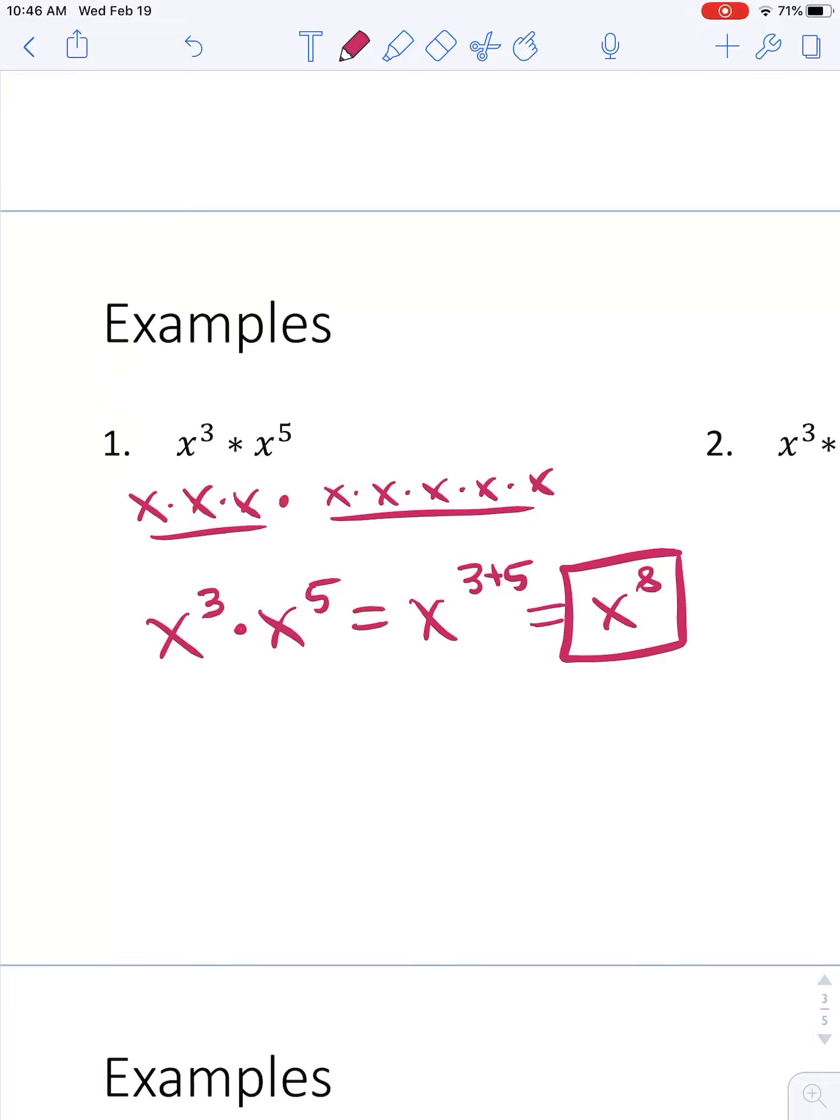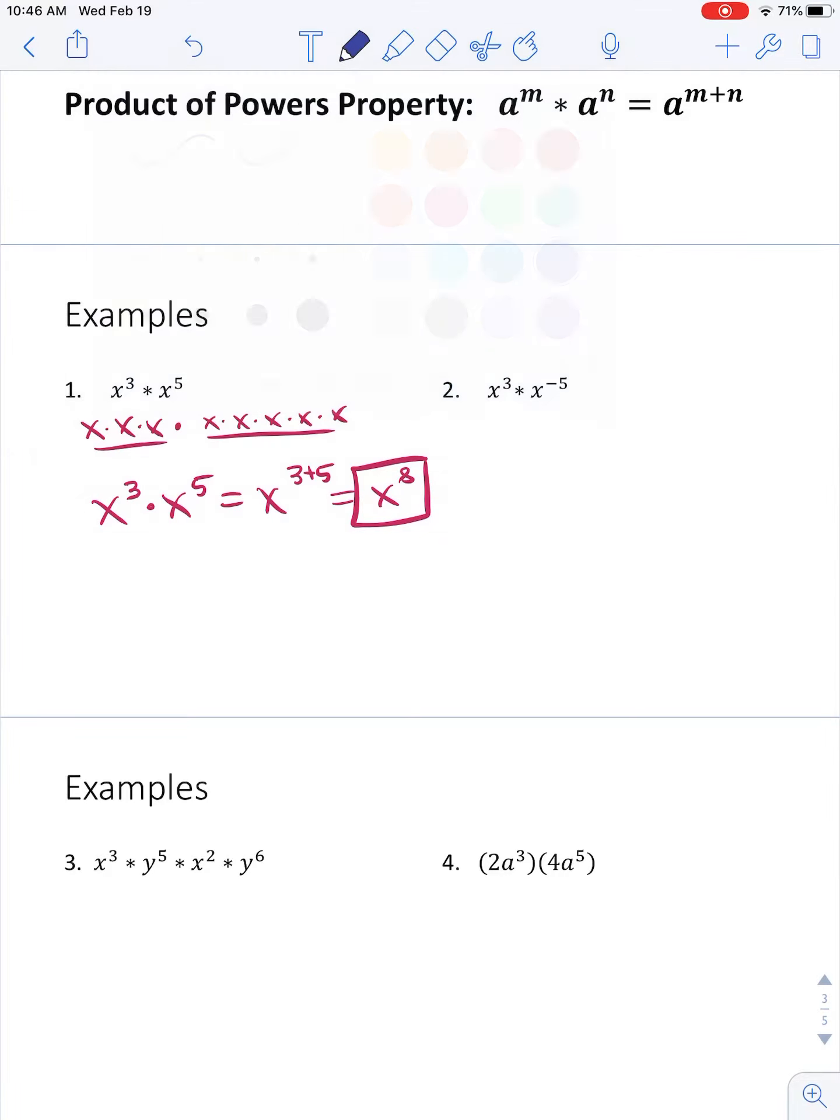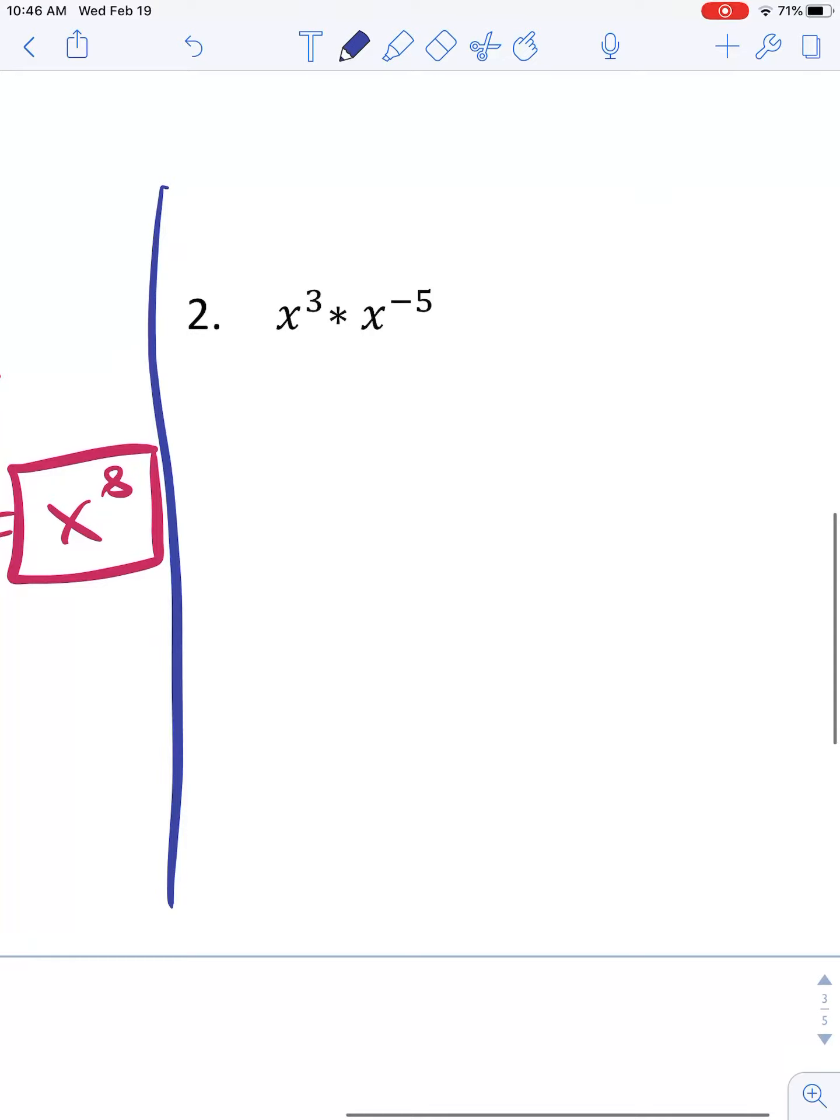That's all you got to do. Now that works out really nice for us when we have a problem that could actually be a little bit harder if we weren't careful. When I have something like x to the 3rd times x to the negative 5th, I can add those numbers together to get x to the 3 plus negative 5, or x to the 3 minus 5, which is x to the negative 2nd.